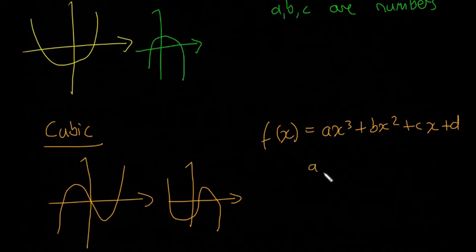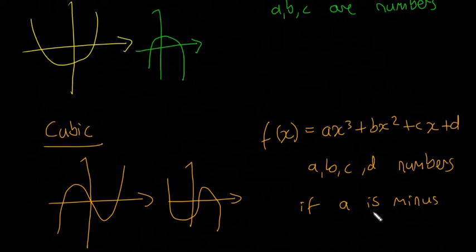a, b, c, d are numbers. If a is minus, you get the one that goes down-up-down, and if a is plus, you get up-down-up. So if a is minus or plus, it swaps the direction, similar to the quadratic one. As long as you know that and the general shape of a cubic function graph, that's important.